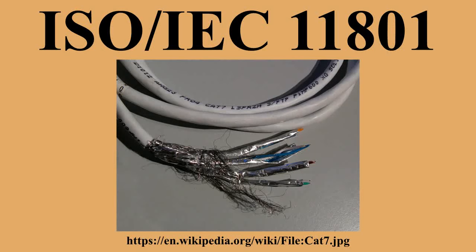Class E: link channel up to 250 MHz using Category 6 cable connectors. Class EA: link channel up to 500 MHz using Category 6A cable connectors. Class F: link channel up to 600 MHz using Category 7 cable connectors. Class FA: link channel up to 1,000 MHz using Category 7A cable connectors. Class 1: link channel up to between 1,600 MHz and 2,000 MHz using Category 8.1 cable connectors.